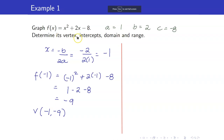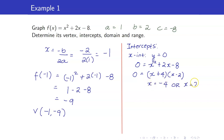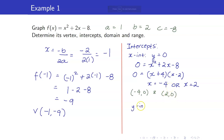Next, let us compute the intercepts. For the x-intercept, set y equal to 0: 0 equals x squared plus 2x minus 8. We factor this as (x plus 4)(x minus 2), so x equals negative 4 or x equals 2. As points, we have (negative 4, 0) and (2, 0). For the y-intercept, set x to 0 and you get y equals negative 8, so our point is (0, negative 8).